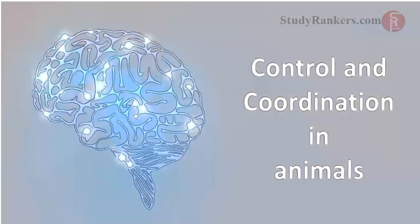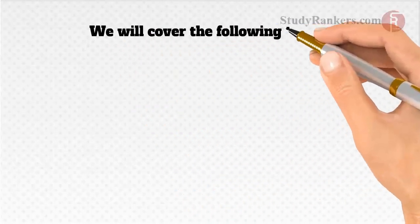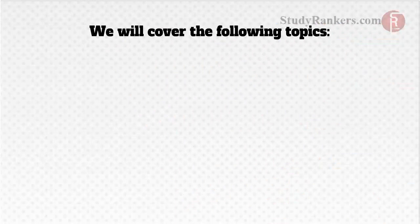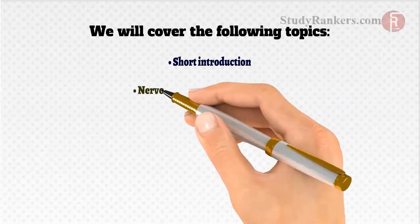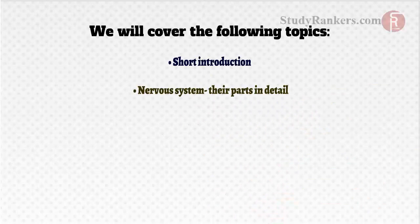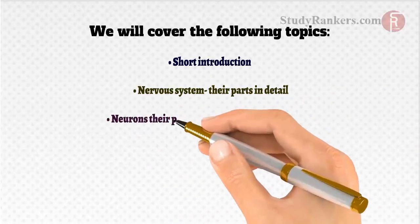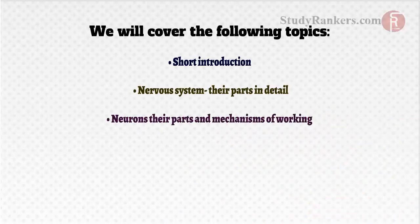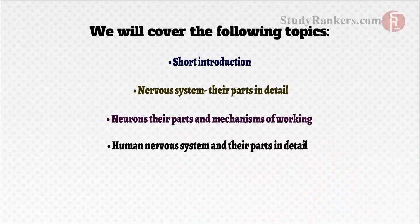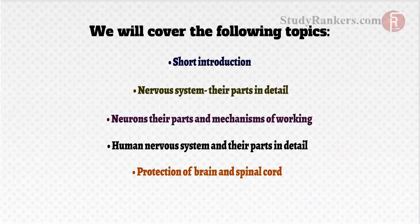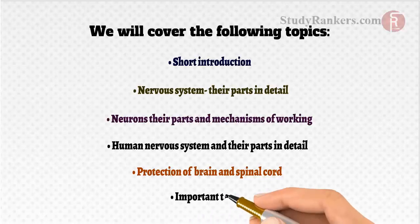The video mainly helps in the study of control and coordination in animals. We will cover the following topics: first, a short introduction; we will know about the nervous system and their parts in detail; we will learn about neurons, their parts and mechanism of working; we will also learn about the human nervous system and their parts in detail; protection of brain and spinal cord; and lastly, we will learn about important terms. So let's start with our first topic.